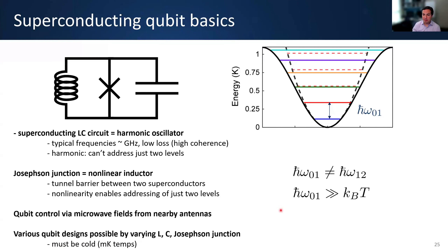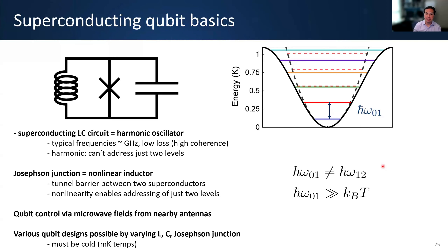One important requirement: you need to be cold. The qubit energy splitting must be much larger than the available thermal energy, meaning we want to be at millikelvin temperatures. When you're well below the thermal energy scale, if you just let it sit, it will initialize itself by relaxing into the ground state. You can also initialize by measurement, which is often what's done these days.